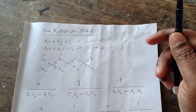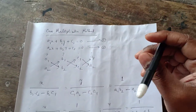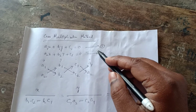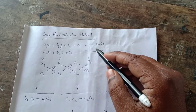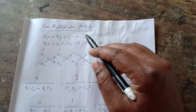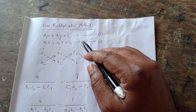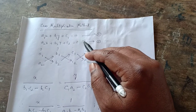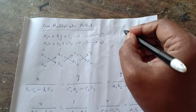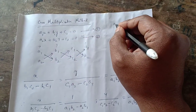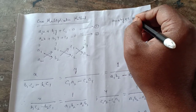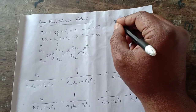Dear students, I am Vahiru Jamansar. I am going to explain about the method of cross multiplication to solve any linear simultaneous equation of the type AX plus BY plus C equal to 0.